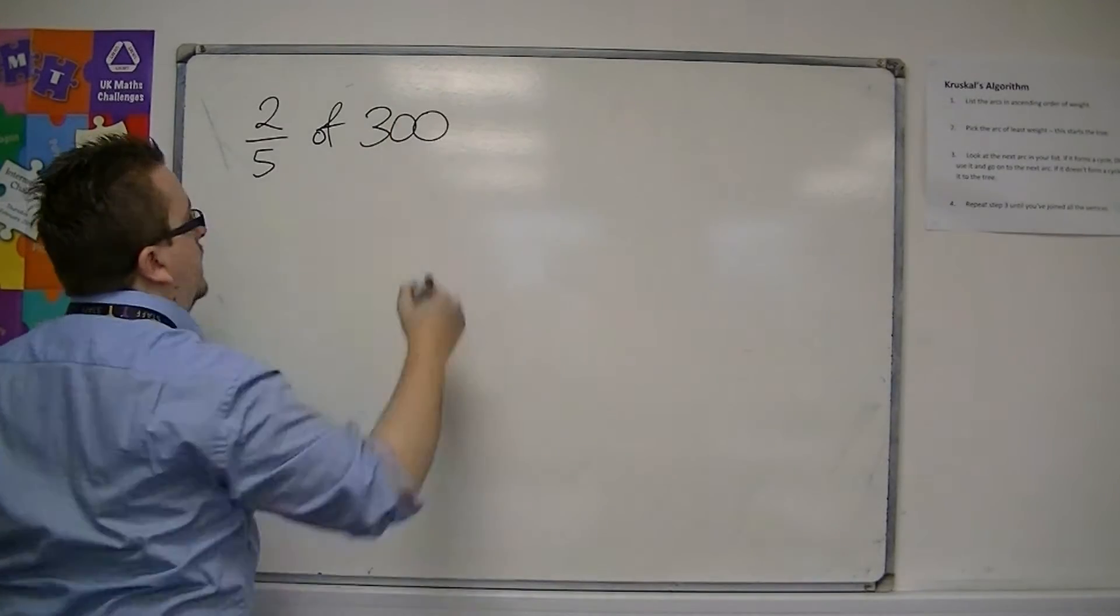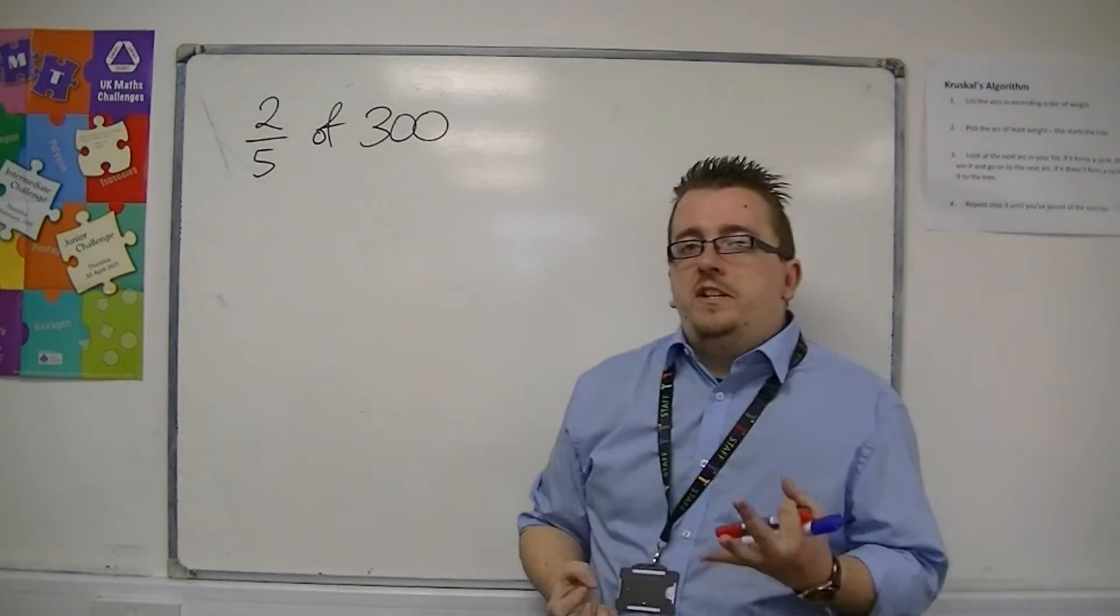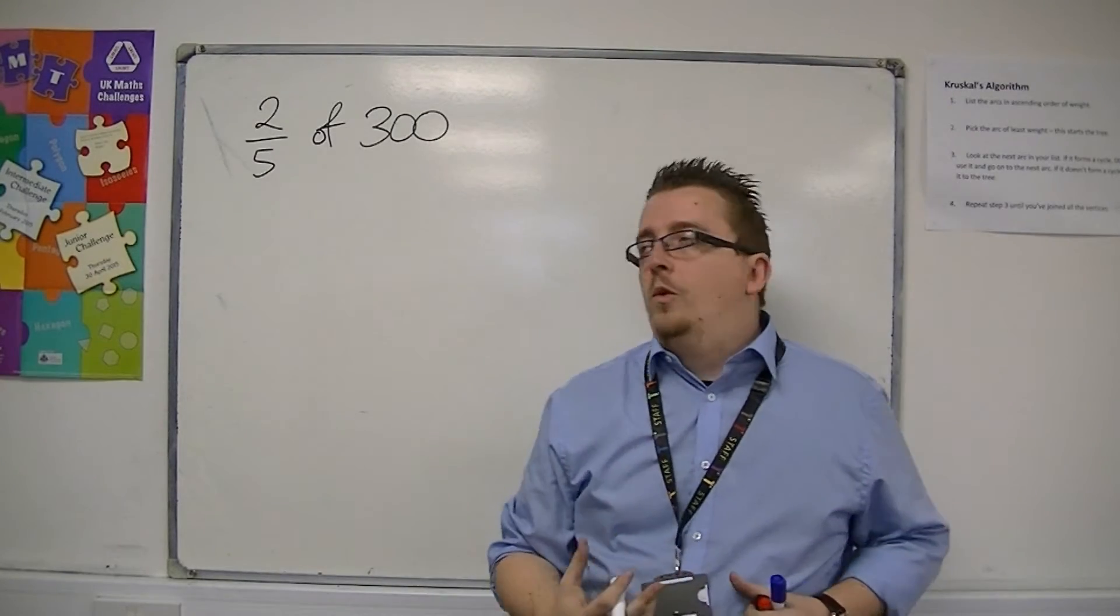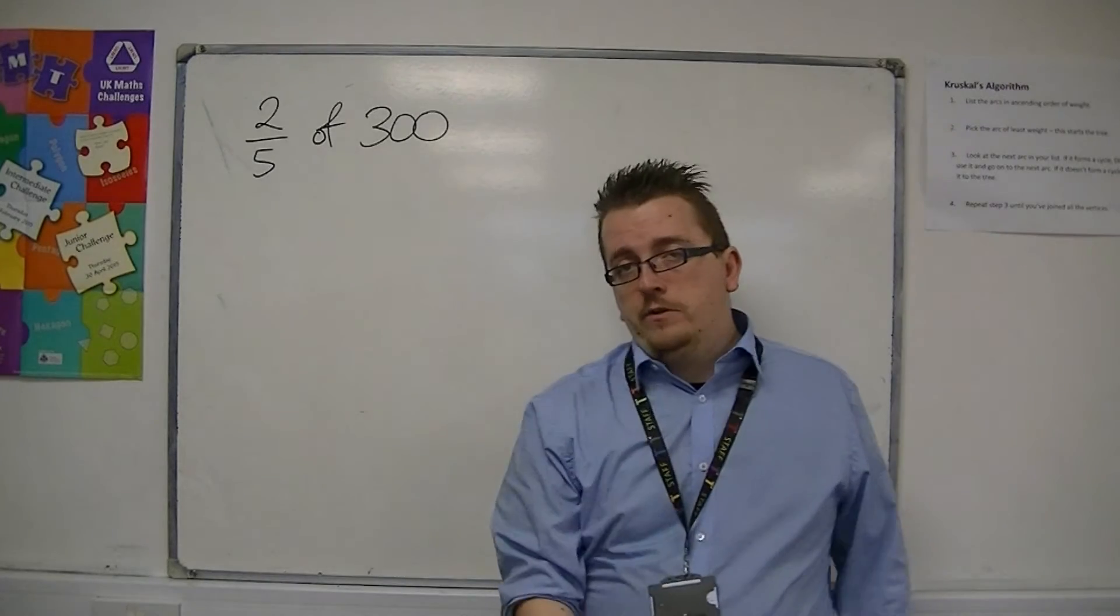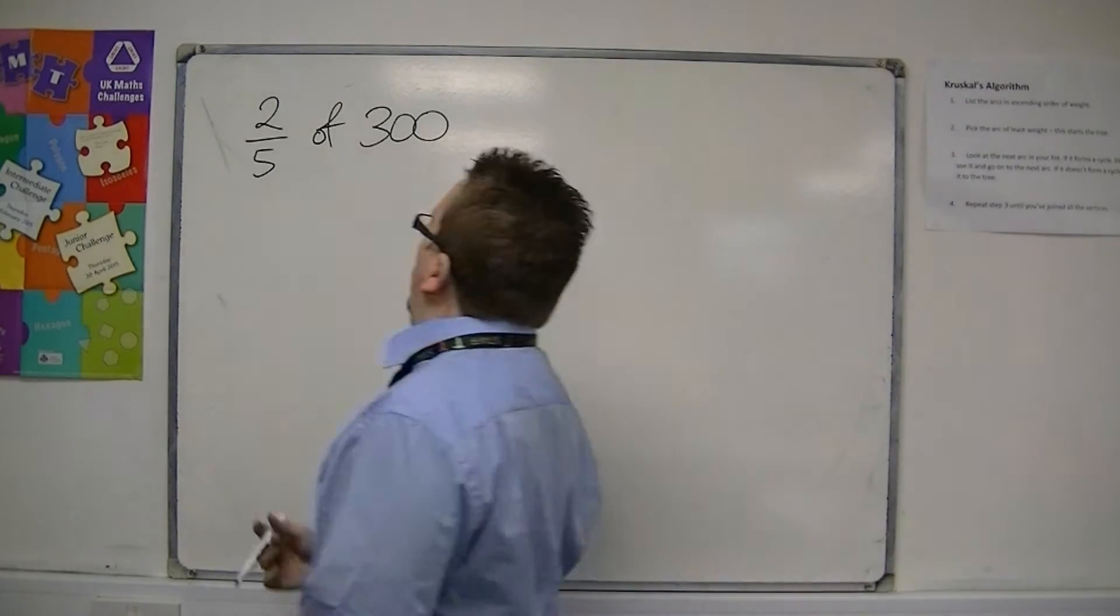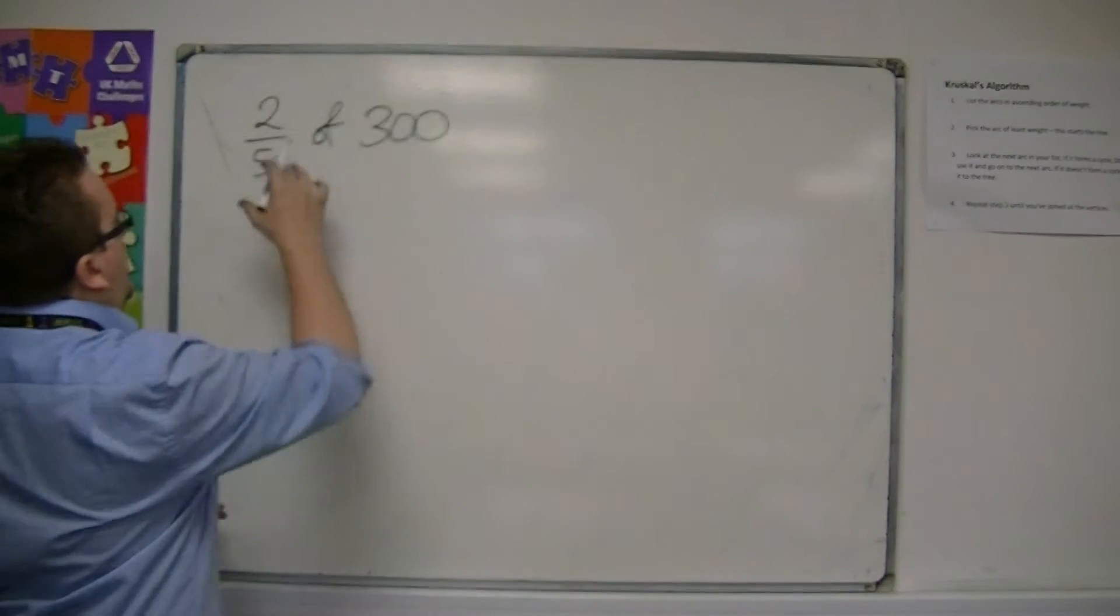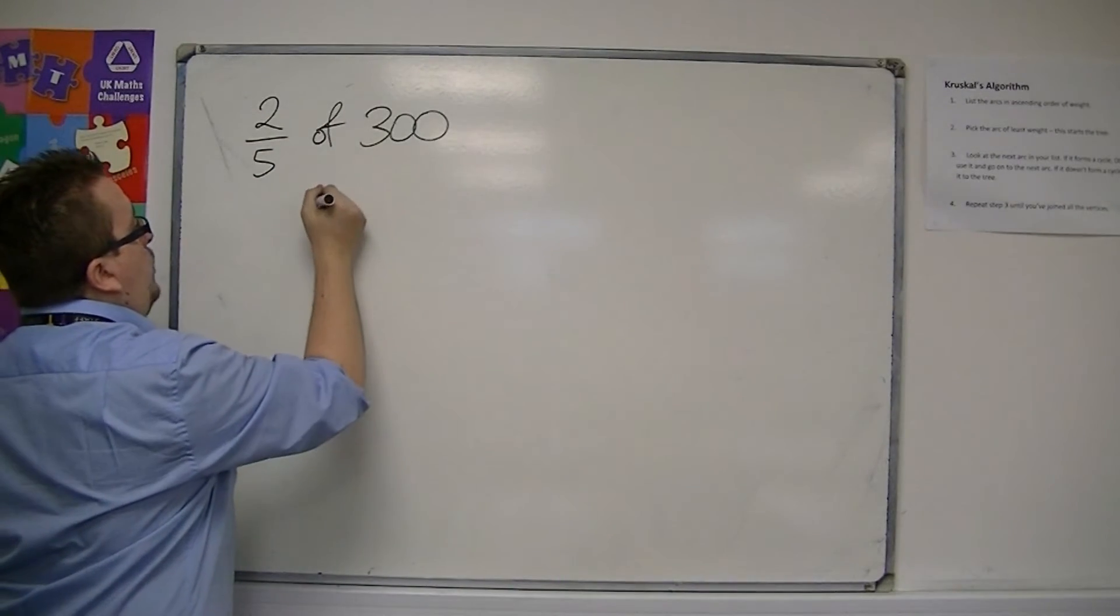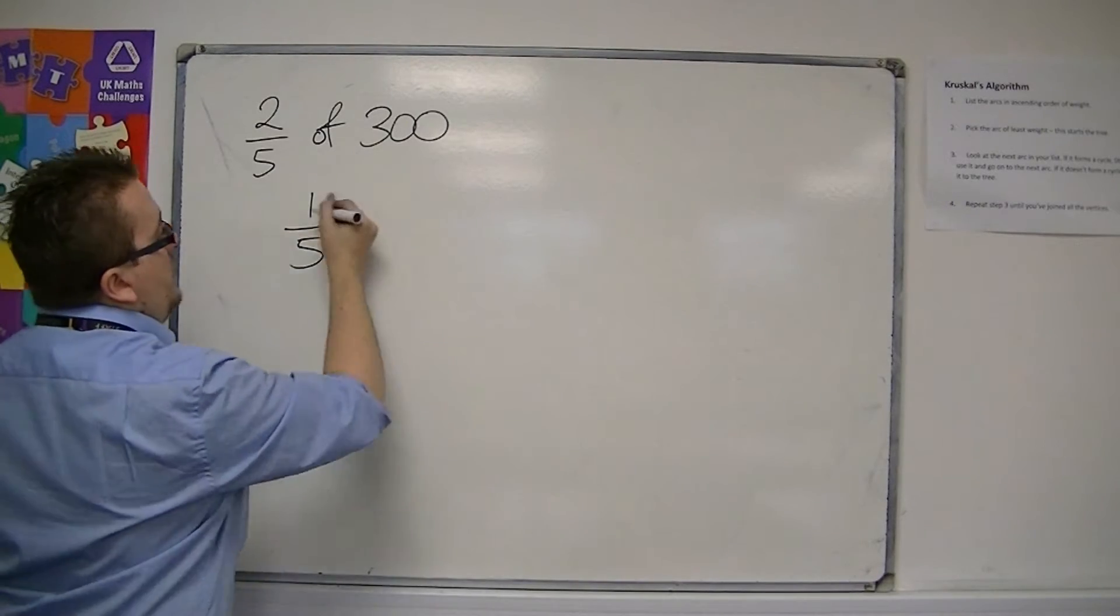then you can do this in slightly different ways depending on whether you are using a written method or by a calculator. So, one way that I like to explain it is that if you're finding two-fifths, what you want to do is find one-fifth and then multiply this by two.